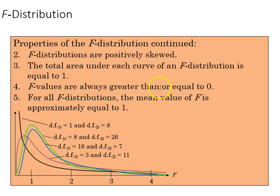F values are always greater than or equal to zero, like the chi-square distribution. And for all F distributions, the mean value of F is approximately equal to one.